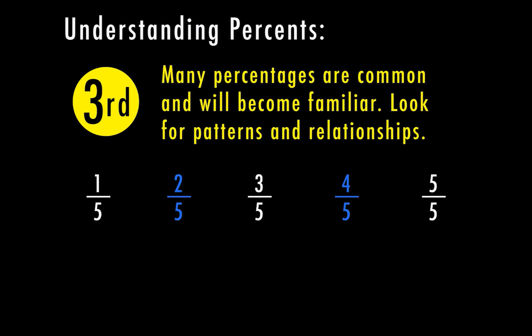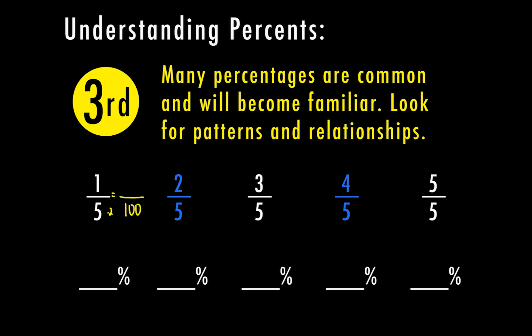Here we have one-fifth, two-fifths, three-fifths, four-fifths, and five-fifths. Five goes into 100 twenty times, and twenty times one is twenty, so one-fifth is twenty percent. Since all denominators are the same, we increase by twenty percent each time: two-fifths is forty percent, three-fifths is sixty percent, four-fifths is eighty percent, and five-fifths is one hundred percent. When denominators are all the same, the numerators increase by the same amount every time.